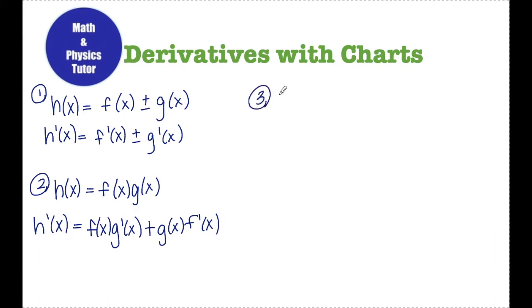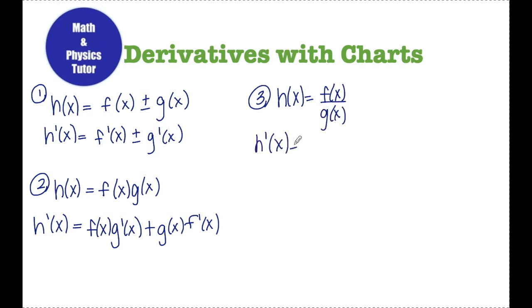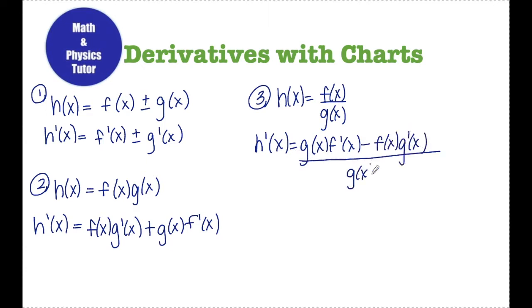We also need to remember if I have a function h of x that can be written as a quotient of functions f of x over g of x, then I can apply the quotient rule to find the derivative of h. That would be low d high, g times f prime, minus high d low, f times g prime, all over low squared — so g of x squared.